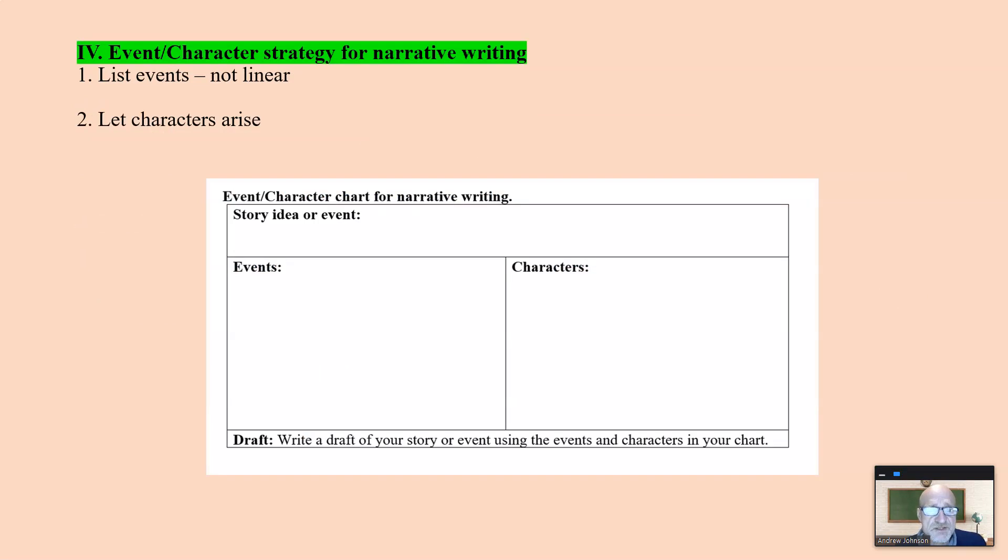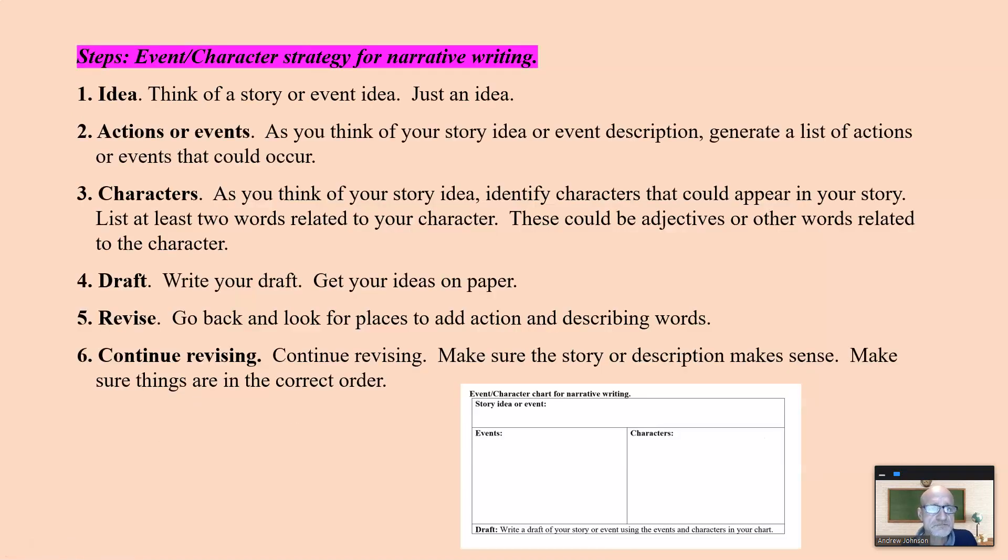Event character strategy. Same thing, except you're listing events, not in chronological order, not linear, but you simply start with a story idea. You list your ideas here, things that could happen in your story. Characters - let the characters arise. And use that to write the draft of your story. You can see the steps: ideas, action, events, characters, draft, revise, continue revising. And you use this to write your draft.